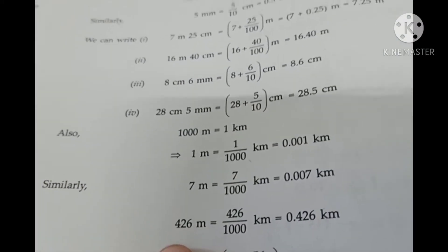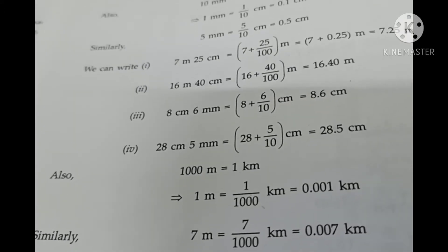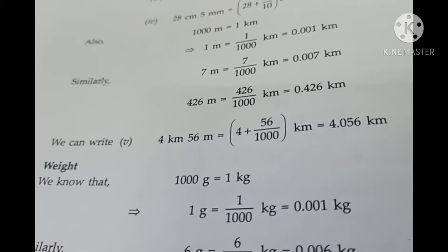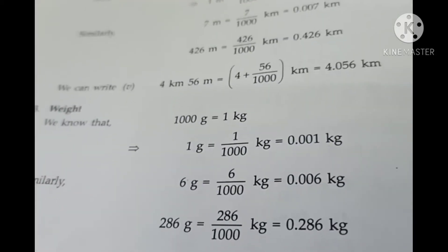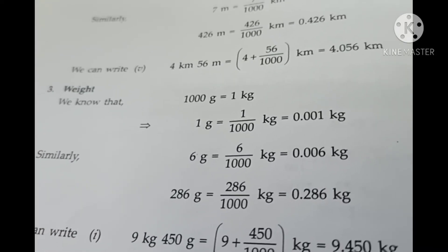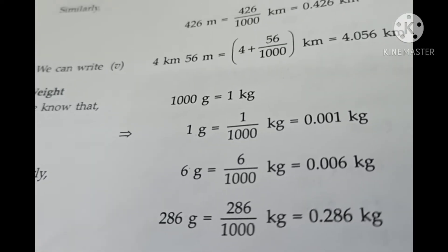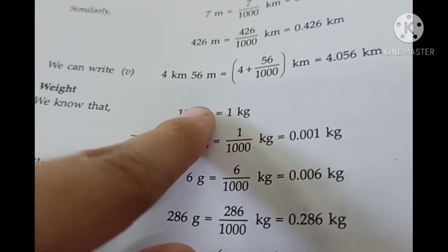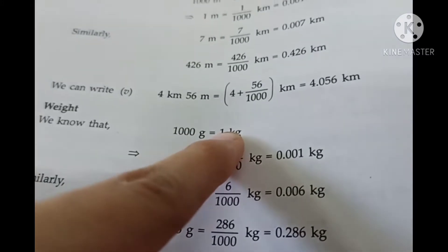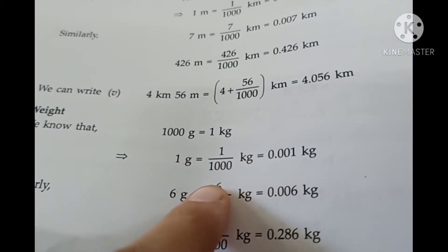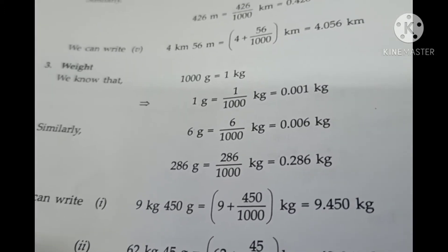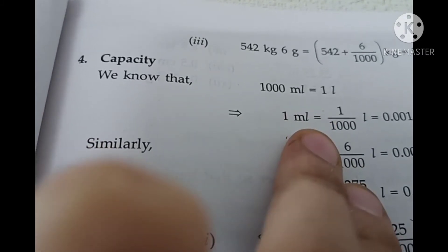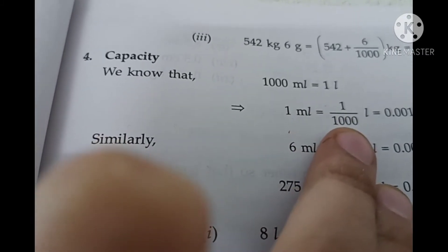For kilometers, we divide by 1000. Weight in grams: if we need kg, then we divide by 1000, because 1000 grams is equal to 1 kg. So 1 gram is equal to 1 by 1000 kg. For capacity: 1000 ml is equal to 1 liter, so 1 ml is equal to 1 upon 1000 liter.